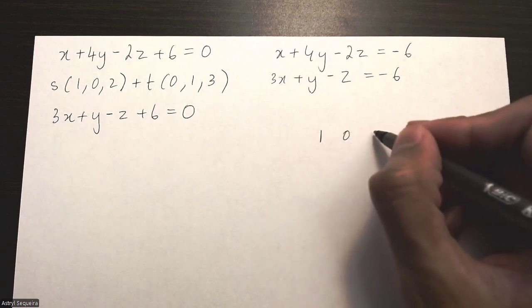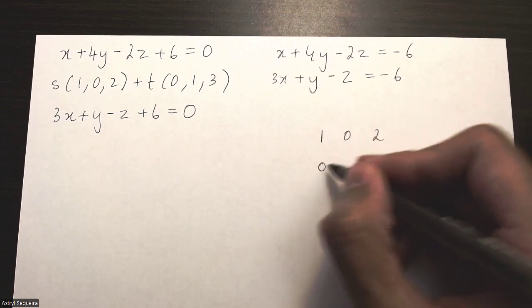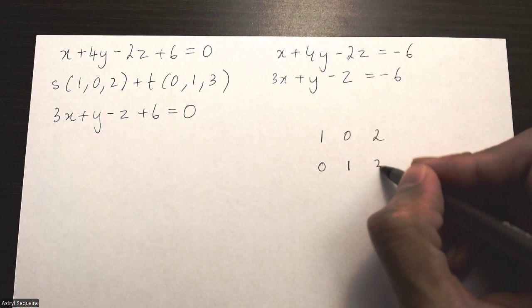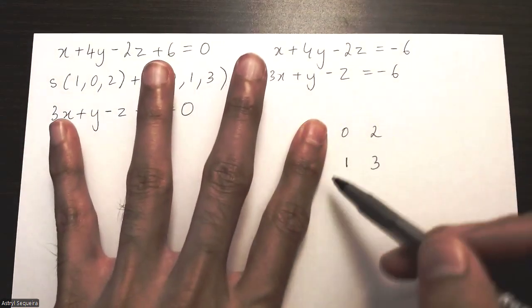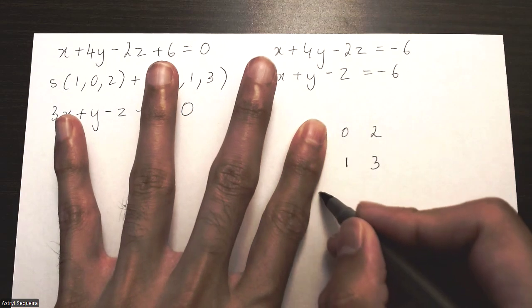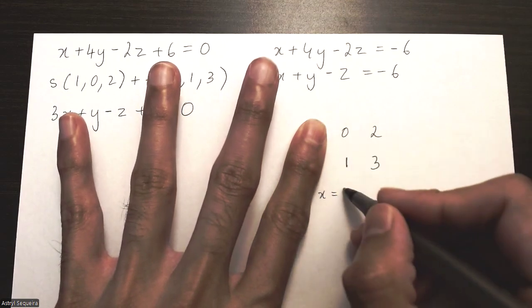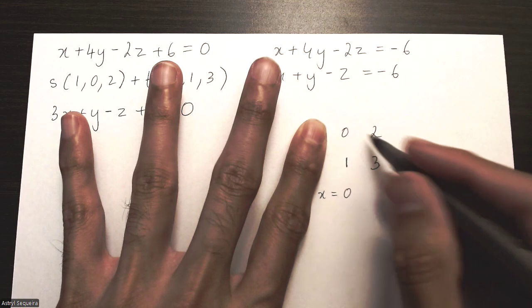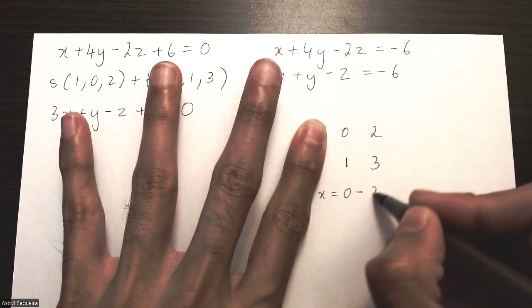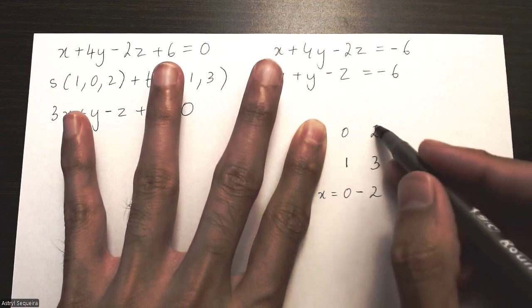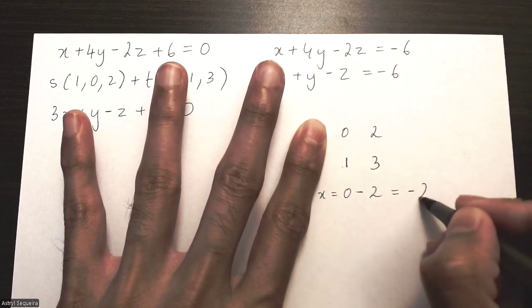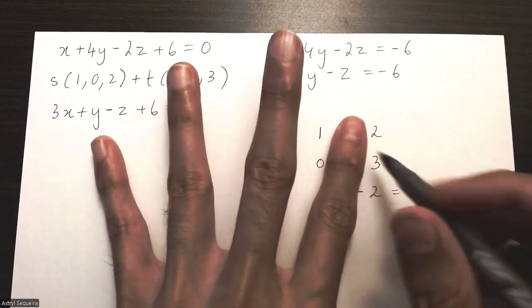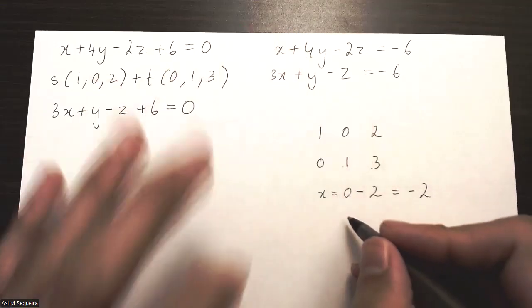There are multiple different ways that people do cross multiplication, but I'm just going to do it this way. I start by hiding the first column and I cross-multiply there. So my x coordinate is 0 times 3 minus 2 times 1, which is just negative 2. My y coordinate is 1 times 3...